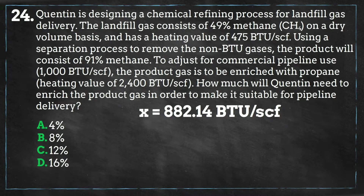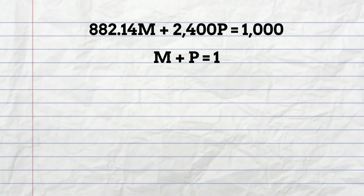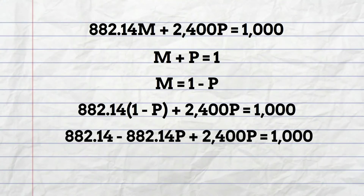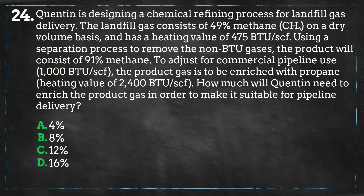Now that we have the heating value of the concentrated landfill gas, we can calculate what percentage of propane we must enrich the landfill gas with to get a heating value of 1000 BTU per standard cubic foot. We are solving for two unknowns: M, the methane percentage, and P, the propane percentage. The first equation uses the heating values, and the second equation states that M plus P equals one. Solving for P, we get P equals 0.077, which equals 7.7%, which is closest to answer B, 8%.